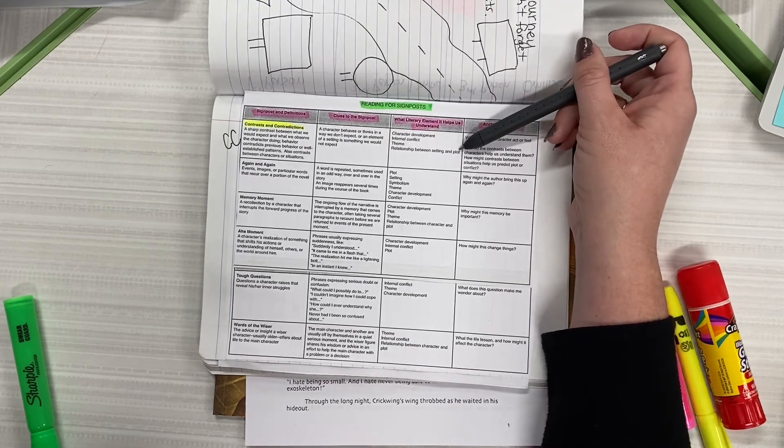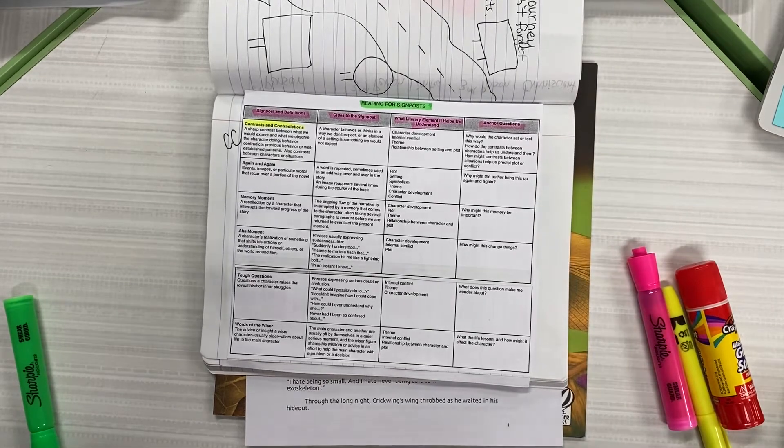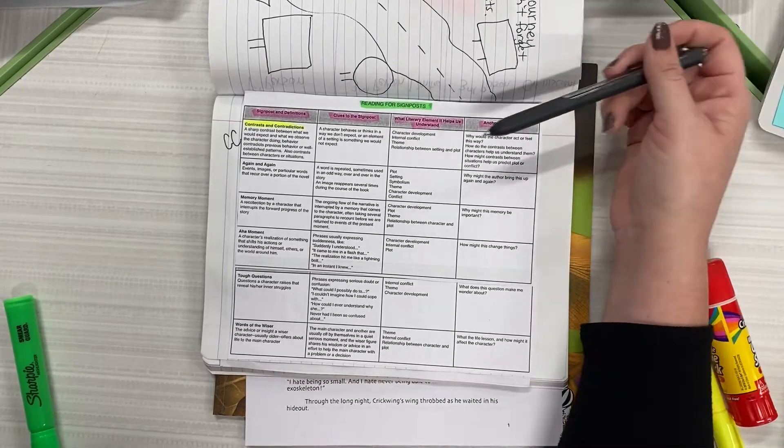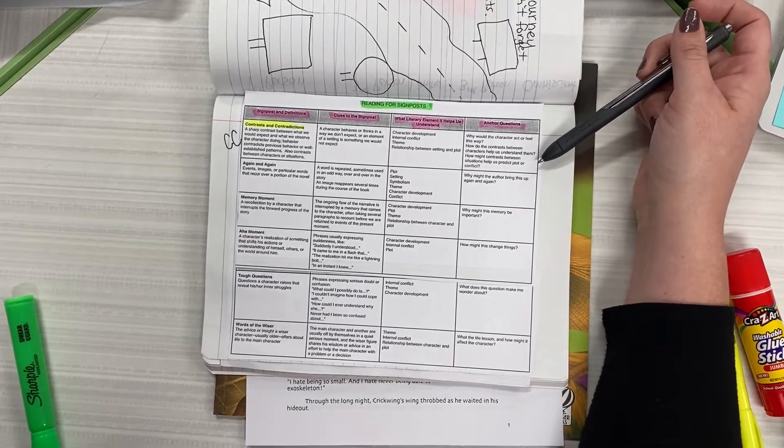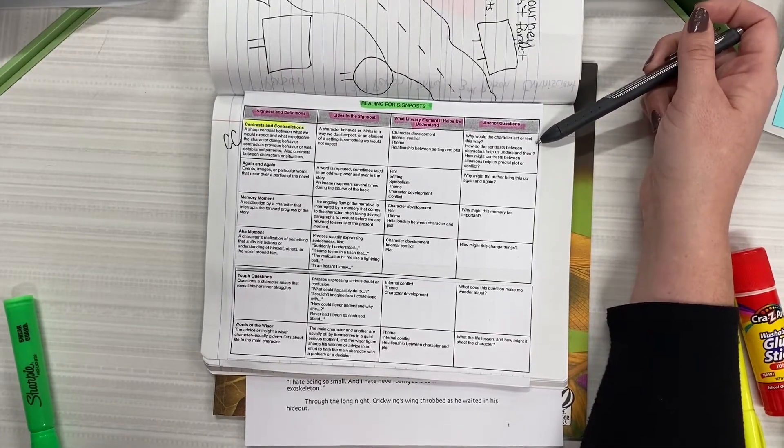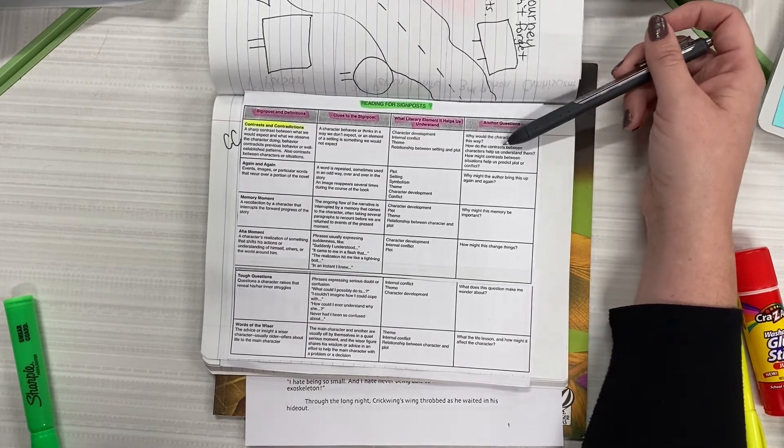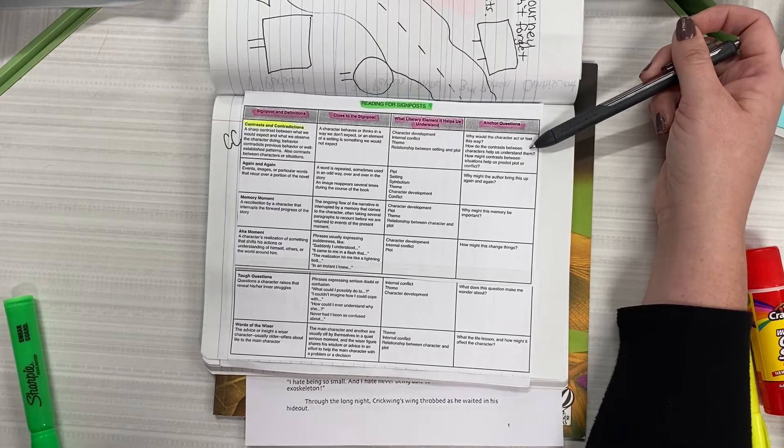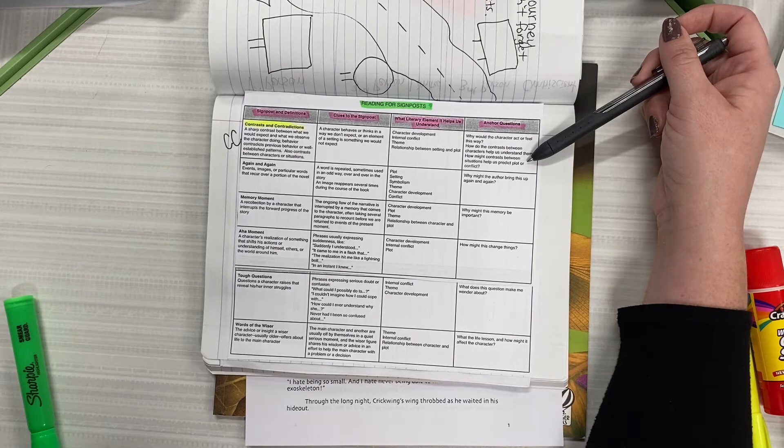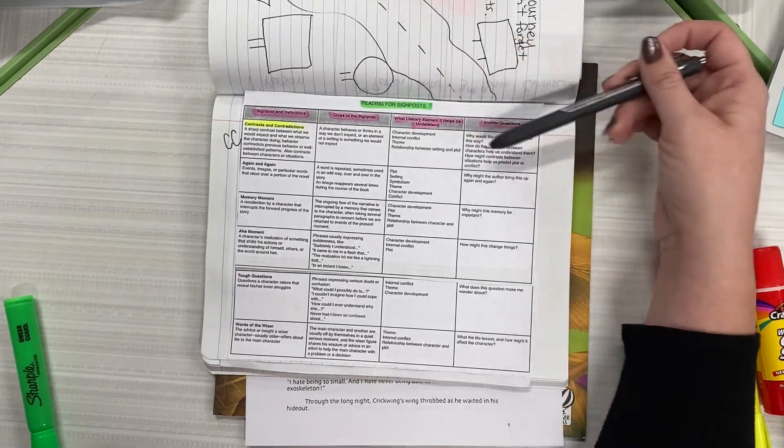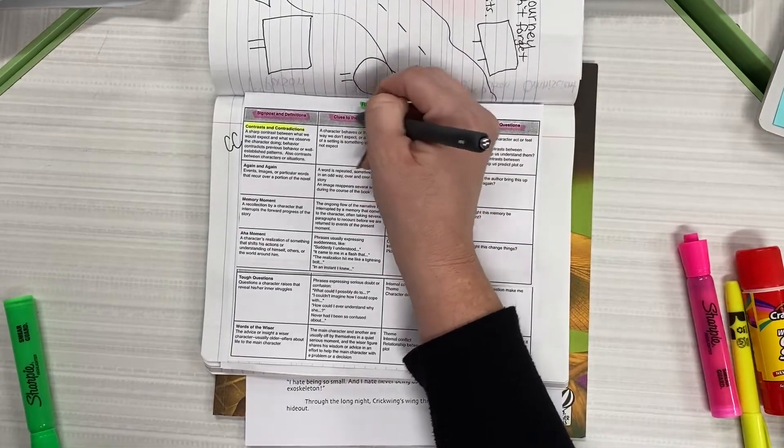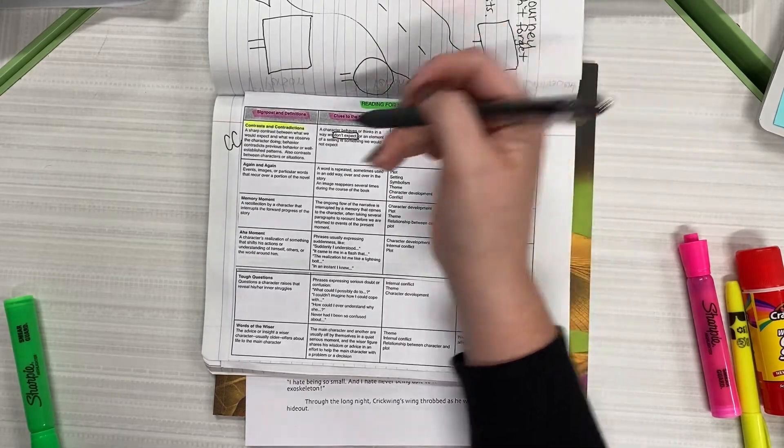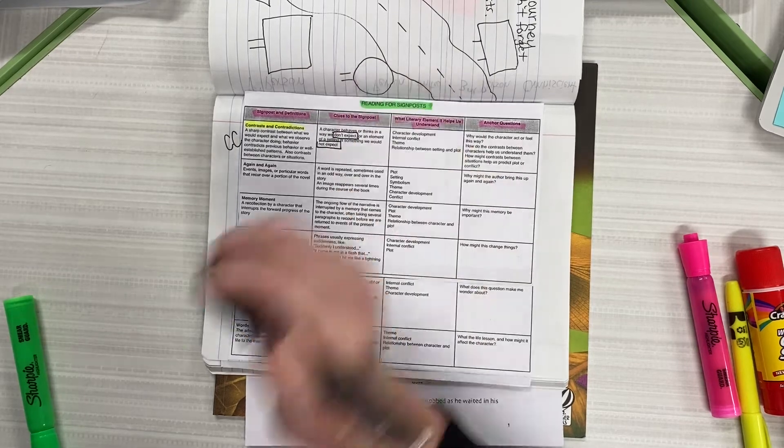Remember theme is the message that the author wants us to learn or apply to our own lives, and also about the relationship between the setting and the plot. Anchor questions we can ask ourselves when we notice a contrast or contradiction is why would the character act or feel this way, or how do the characters contrast between or how do the contrast between characters help us understand them. How might contrast between situations help us predict plot or conflict.